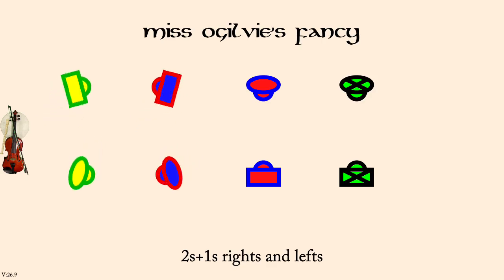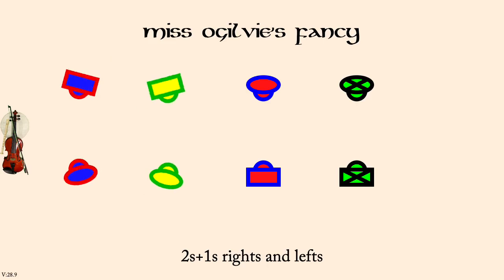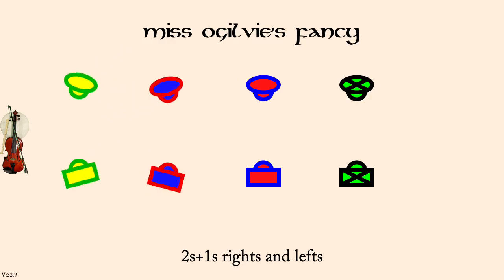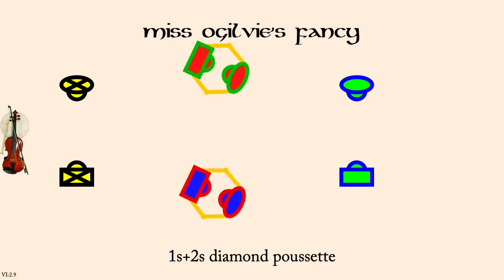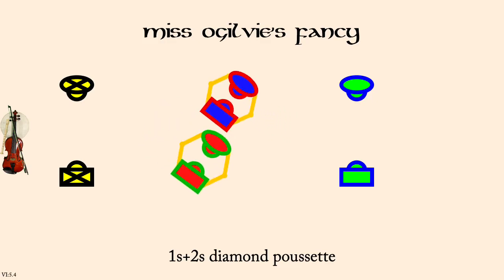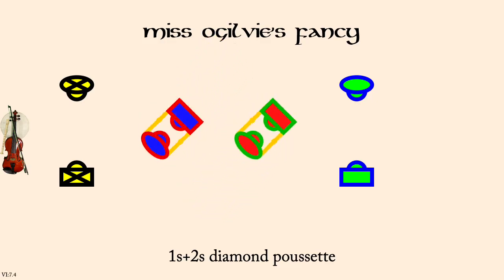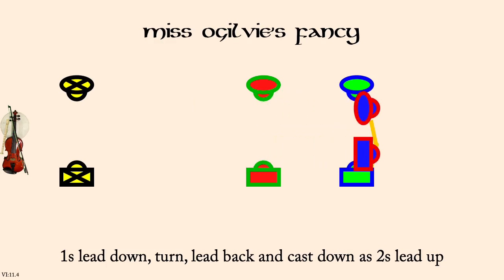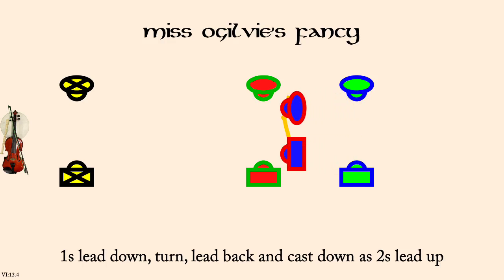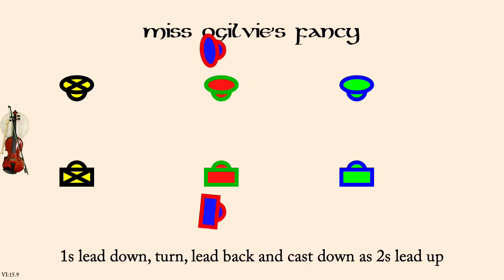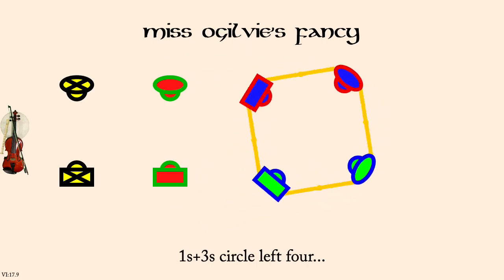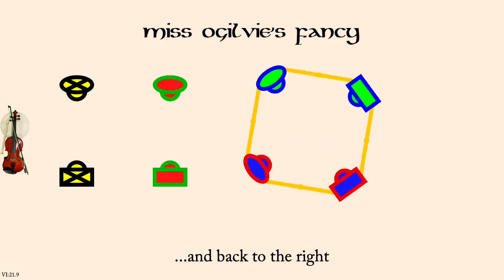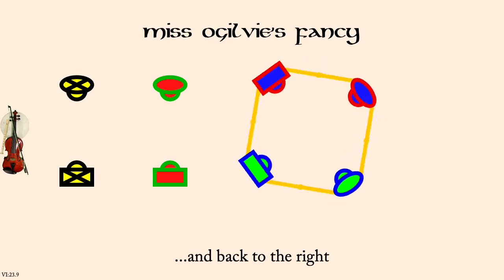Twos and twos, Diamond Pousset. Ones and twos, Diamond Pousset. Turn, lead back, and cast down as twos lead up. Once in threes, circle left, four. And back to the right. Twos and ones, rights and lefts.